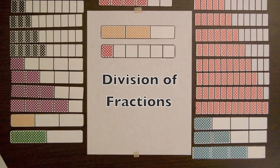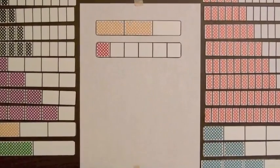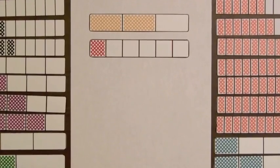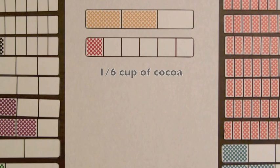If a cook has two-thirds of a cup of cocoa, represented by the shaded amount of the top bar, and a batch of chocolate cookies requires one-sixth cup of cocoa, represented by the lower bar, how many batches of cookies can be made?